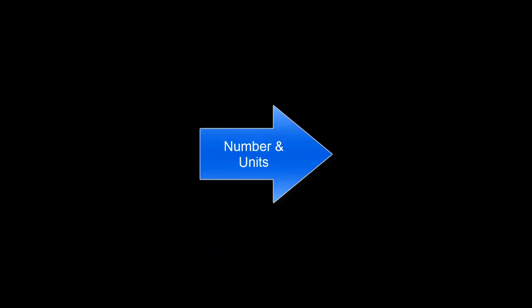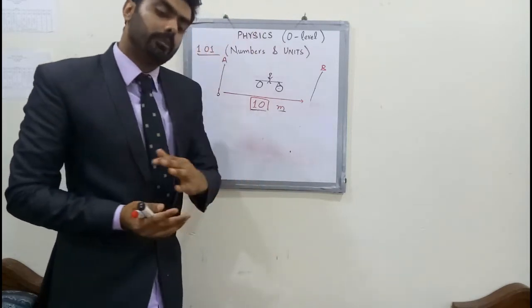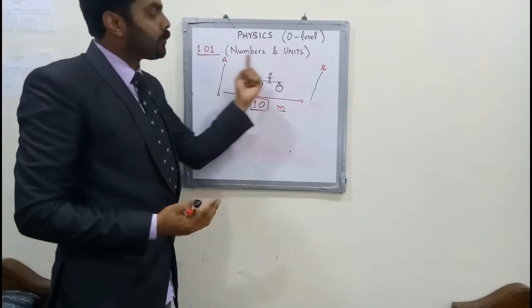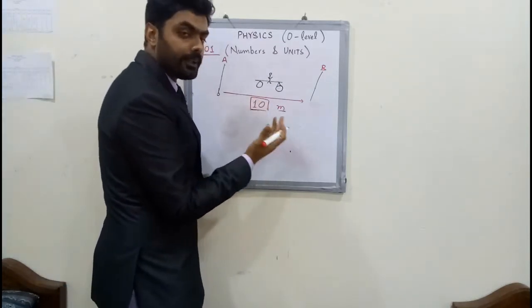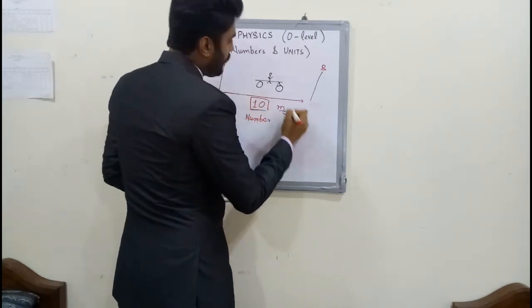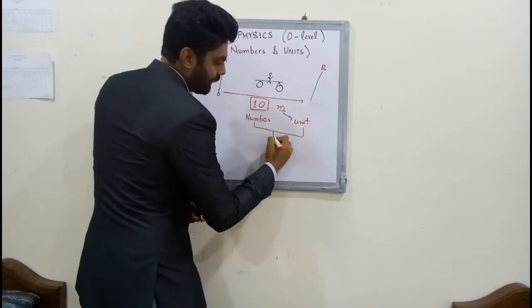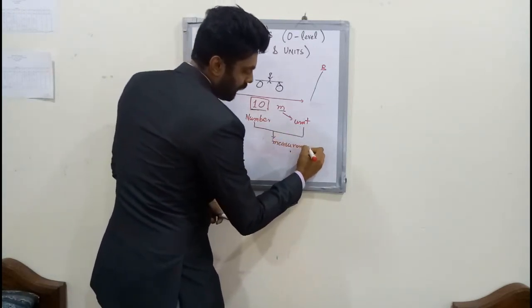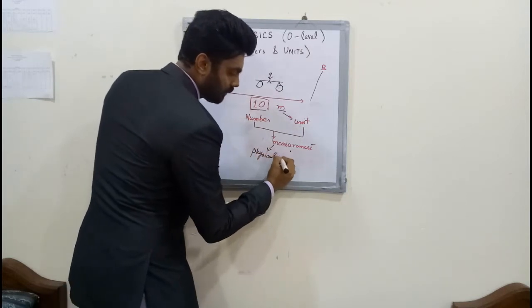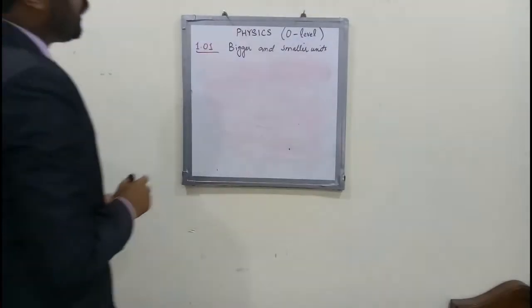Let's move on to the very first topic, 1.01, about numbers and units. First we have to understand what is measurement — before that we have to know what is a number and what is a unit. For example, a cyclist covers a distance of 10 meters from point A to point B. Here, 10 is the number and 'm' is the unit — meters. Combining the number and the unit gives us a measurement, and this measurement gives us a physical quantity.